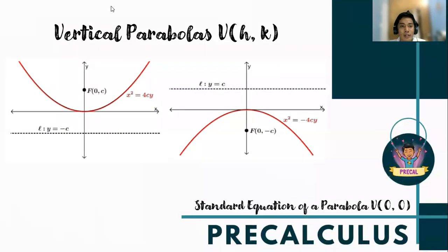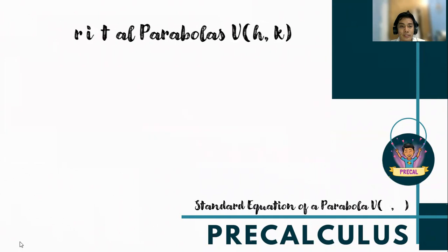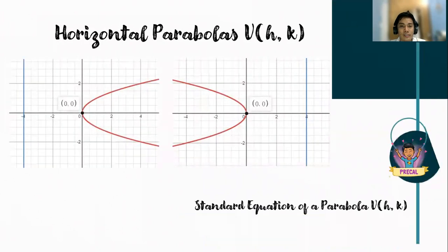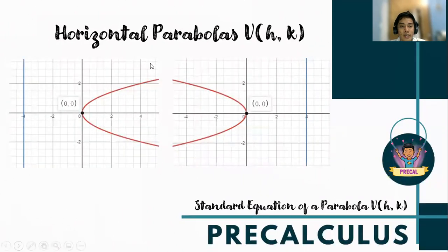Let's review: vertical parabolas open upward or downward, while horizontal parabolas open to the left or to the right.